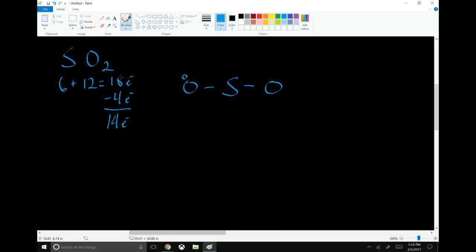Now we have sulfur in the middle. We draw an oxygen on either side, that uses four electrons, giving us 14. So now we have 2, 4, 6, 8, 10, 12 electrons used up, leaving two more to go on sulfur as a non-bonding pair.